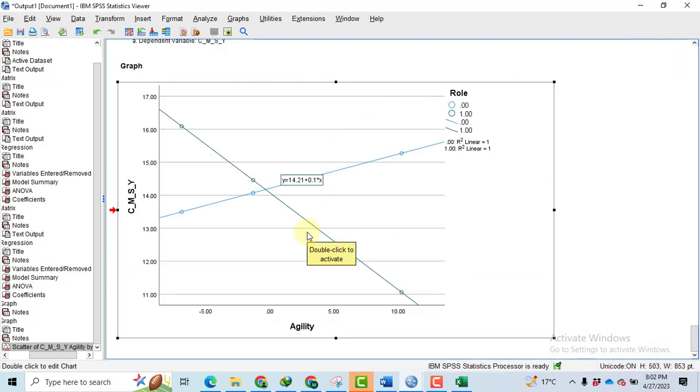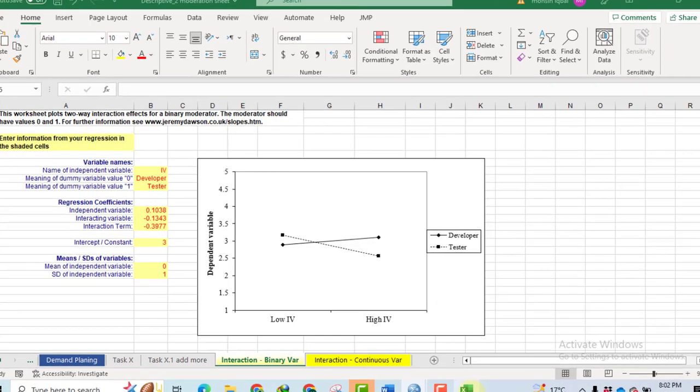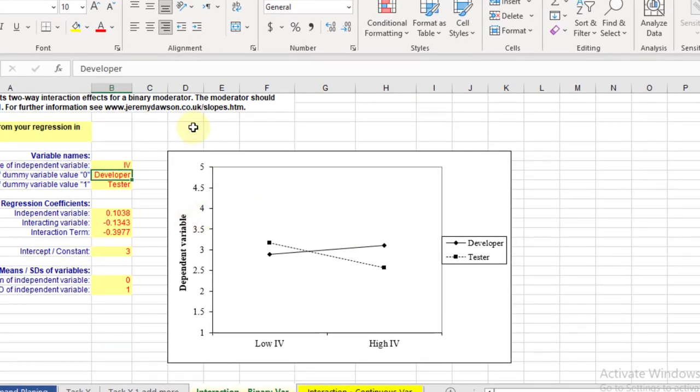However, a more attractive graph is available in the Excel sheet. I am using this sheet for a binary moderator. So first of all, I have entered their levels, developer and tester.